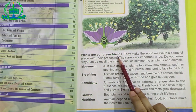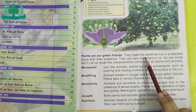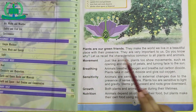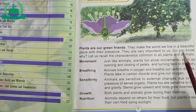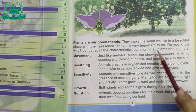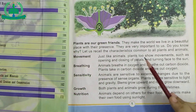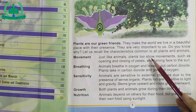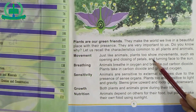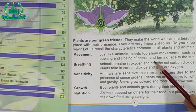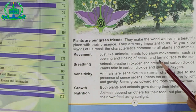Plants are our green friends. They make the world we live in a beautiful place with their presence. They are very important to us. Do you know why? Let us recall the characteristics common to all plants and animals. As we know, Allah gave us millions of plants. Their presence makes our world more beautiful. The characteristics of plants and animals are common.